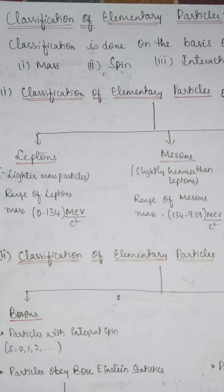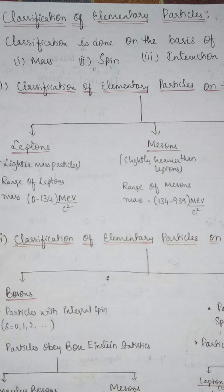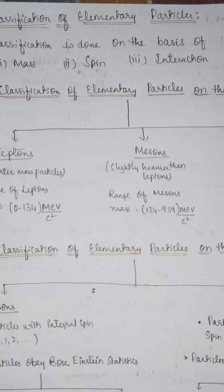We talked about the interactions between different particles and masses, and we talked about the elementary particles in each group. Now, the classification of elementary particles is based on mass, spin and interaction — these three criteria.